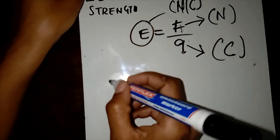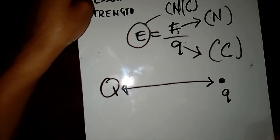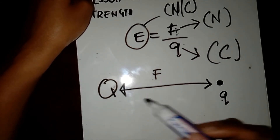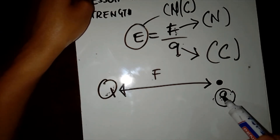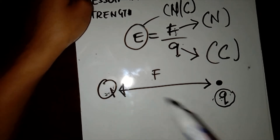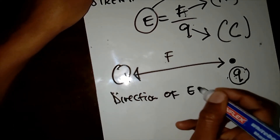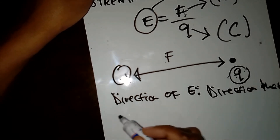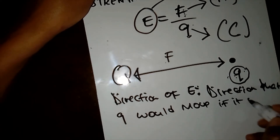Imagine we have a large charge Q and then a point charge q nearby. This point charge q will experience a force due to charge Q. The charge q is the one experiencing the electric field due to Q. In terms of direction, the direction of E is the direction that q would move if it were positive.